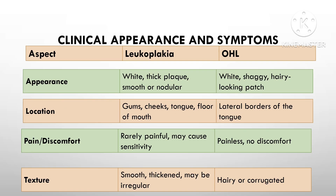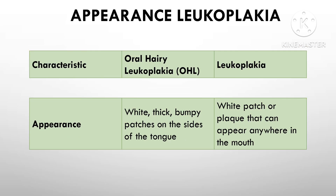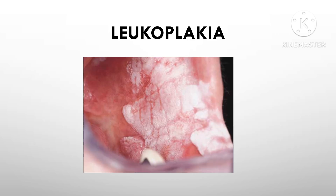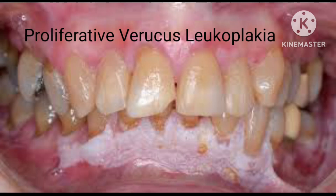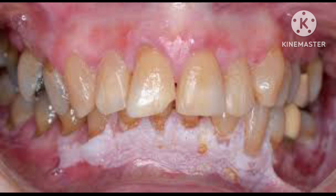Both leukoplakia and OHL present as white patches, but their clinical appearance differs significantly. Leukoplakia typically appears as a flat white plaque that can develop on the gums, inner cheeks, tongue, or floor of the mouth. These patches are usually firm and thickened and cannot be scraped off. While leukoplakia itself does not usually cause pain, patients may experience sensitivity or discomfort when the lesion is exposed to spicy or hot food. The texture is generally smooth, although in cases like verrucous leukoplakia it can be more irregular or nodular.